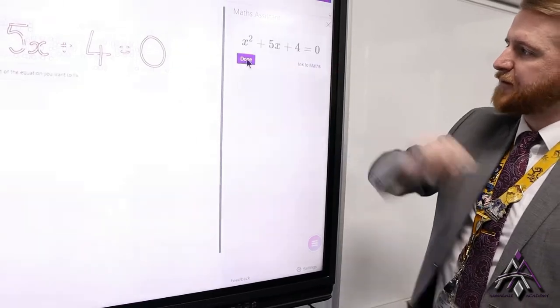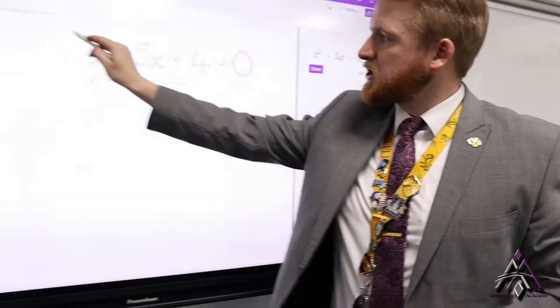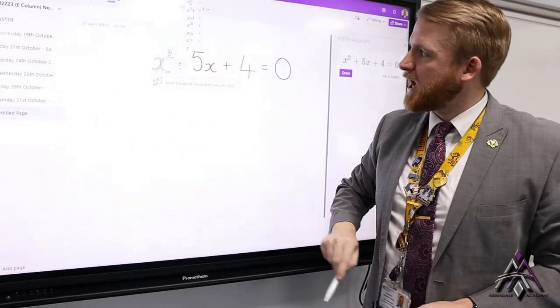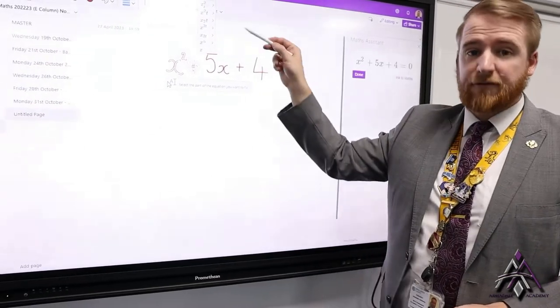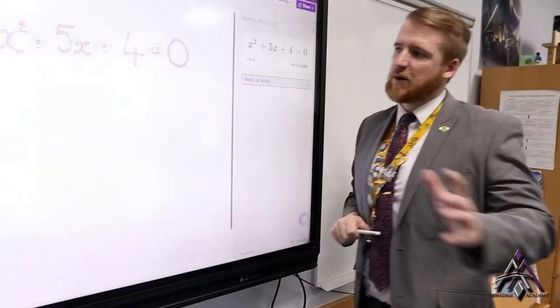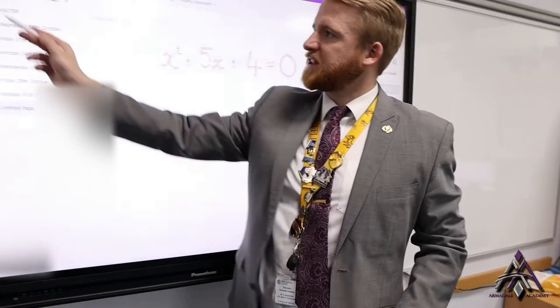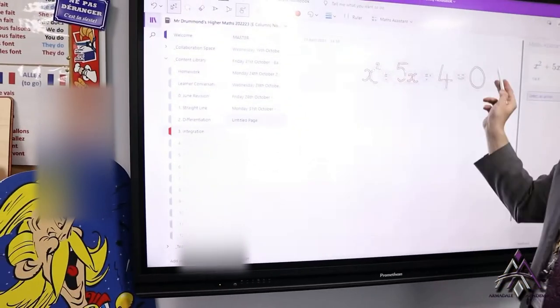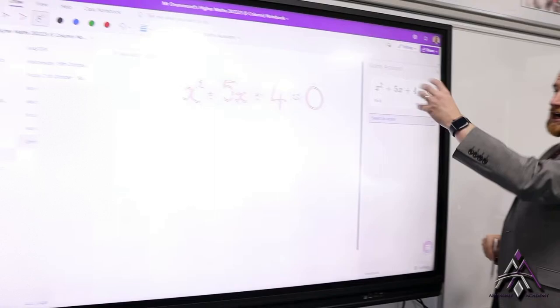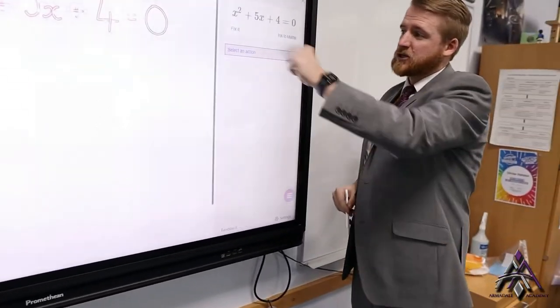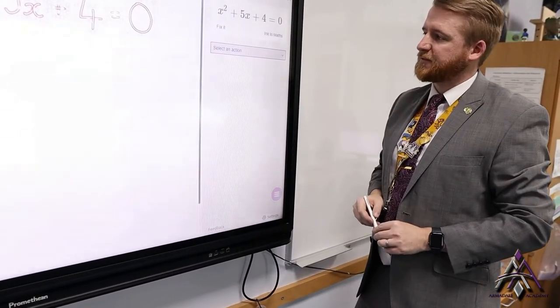If it doesn't come up quite correctly you hit fix it, you go back to your equation, you highlight the bit that you're not happy with and it will try and fix it for you. Just to recap what I've done is I have used the select tool, the lasso tool, I've lassoed my equation, I've came back in here and we've checked that this is happy so we've already checked that we don't need to fix it.